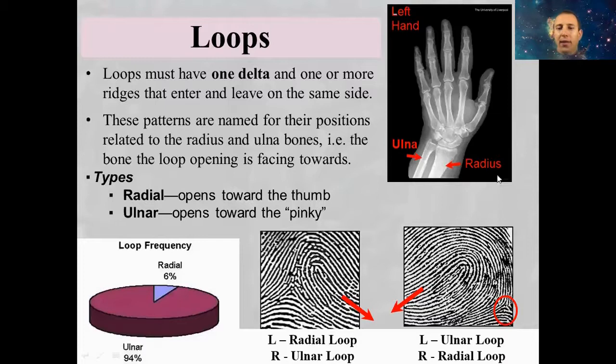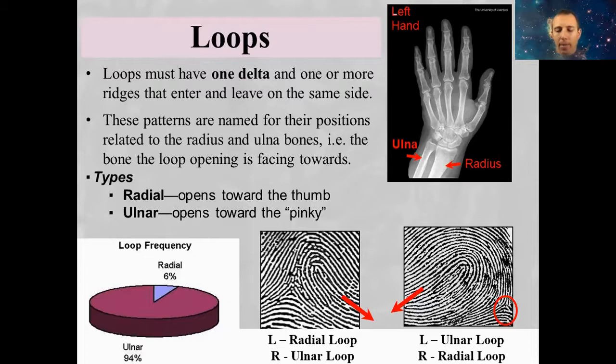So then we have loops. Again, loops are probably the hardest ones to identify. Loops are going to have one delta and then one core. We have two different names to describe the different types of loops, and the way we do this depends on what hand the fingerprint is going to be on.